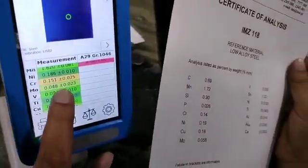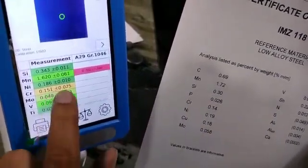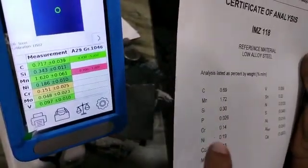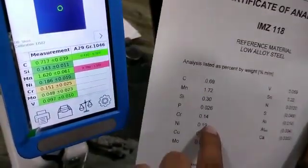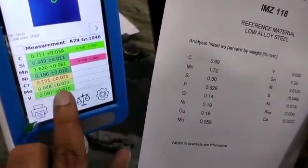Another element is the nickel. 0.19 and our value is 0.186. Chrome is 0.18 and here chrome is 0.14 and result is 0.15.